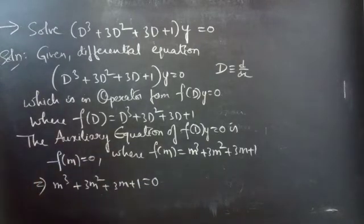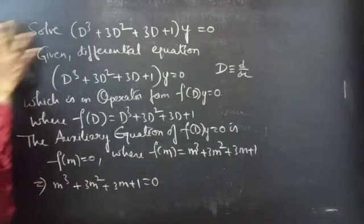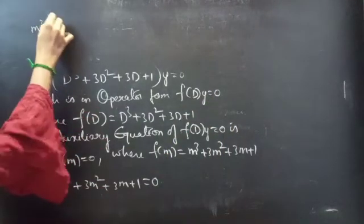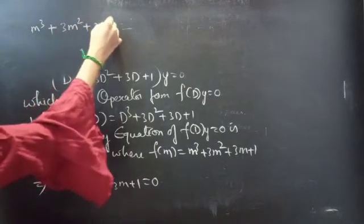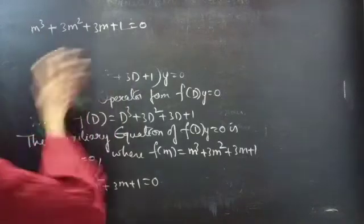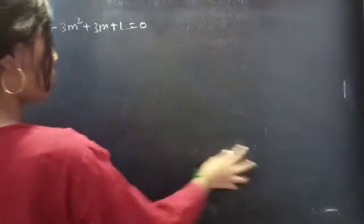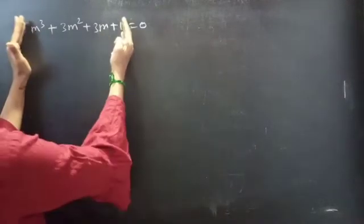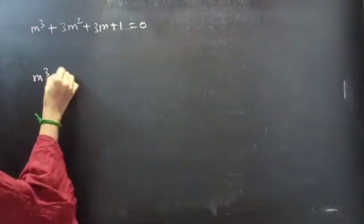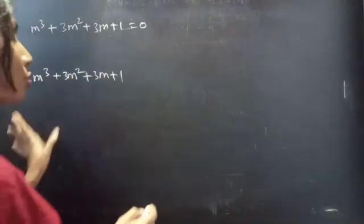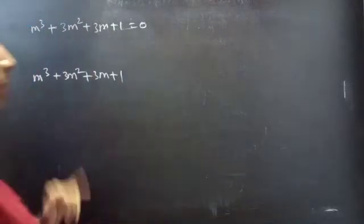We need to find the roots of the auxiliary equation to write the general solution. We will use synthetic division, or if we can find roots using factorization, we can use that method. Let us consider the polynomial m³ + 3m² + 3m + 1 and find its roots using synthetic division. We will choose a suitable m that satisfies the polynomial.